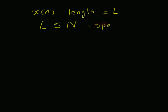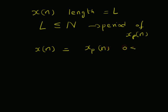As long as this length L is less than or equal to N — where N is the period of x_p(n) and also the number of sub-intervals in the interval ω ∈ [0, 2π] — we can recover x(n). That is, x(n) = x_p(n) for n from 0 to L−1, and x(n) = 0 for n from L to N−1. So x(n) can be recovered from x_p(n) provided its length L ≤ N.